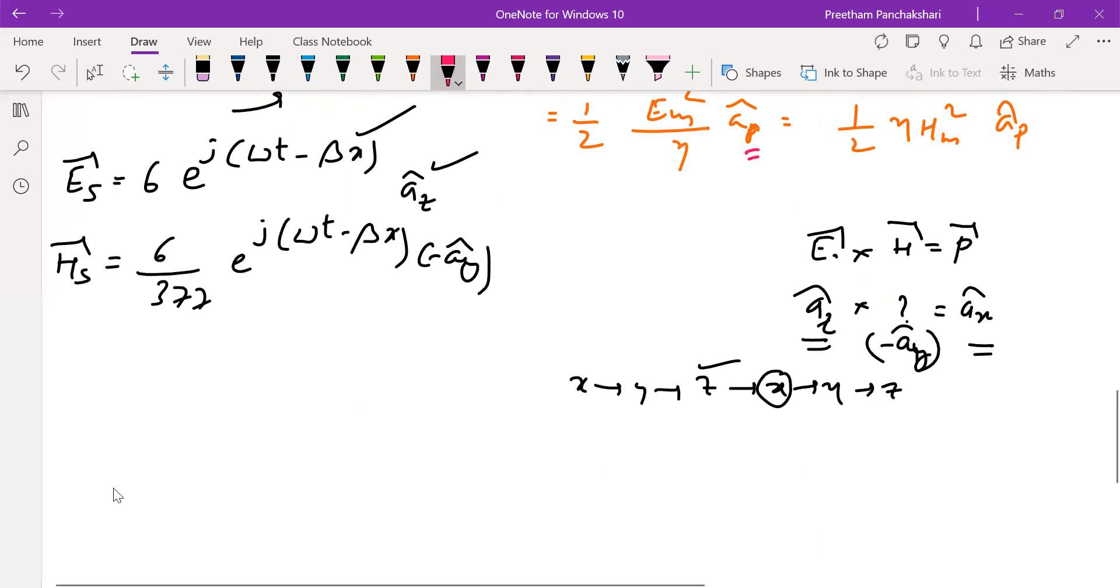Next, keeping these two equations, we directly find the average: ½ into real part of E_s cross H_s conjugate.